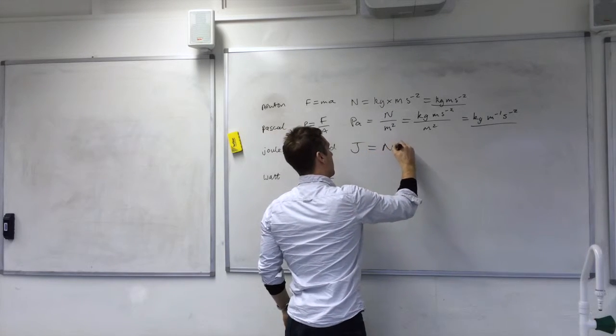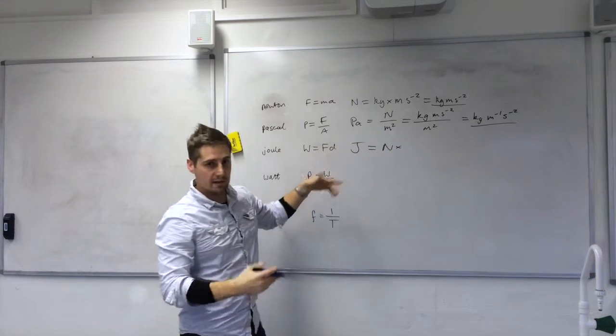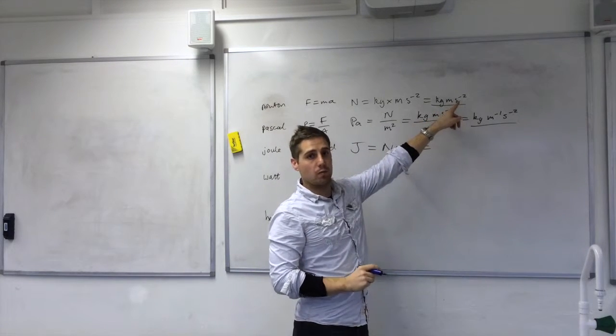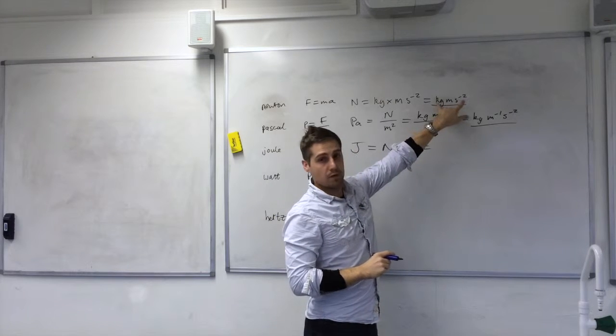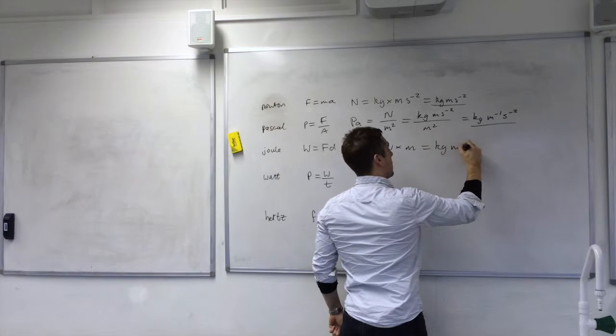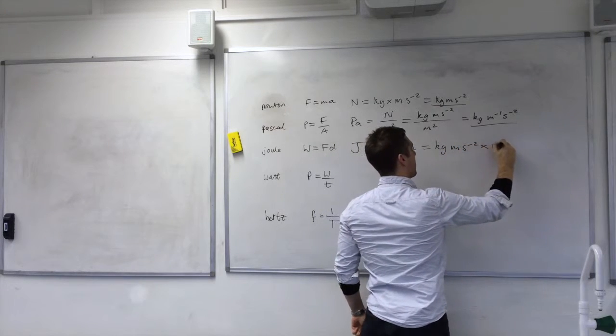Multiplied by distance in metres. So I can again use what I have worked out for the Newton in base units here. Kilogram metres per second squared times my metres.